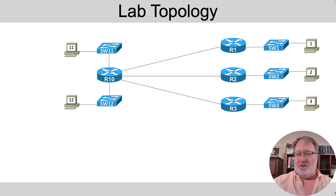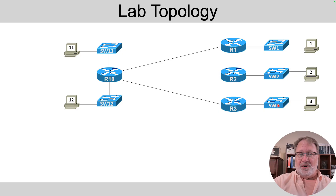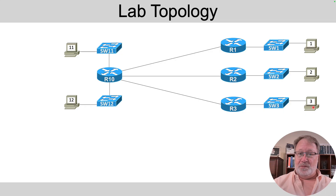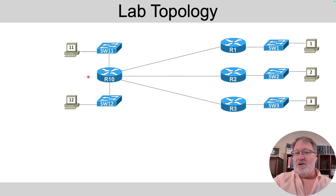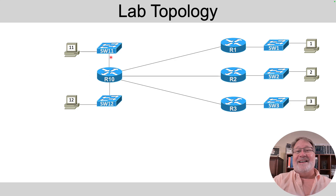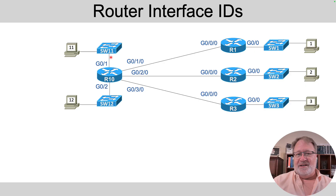Let's look more closely at the topology. The three routers on the right are branch office routers. Each is connected to a single LAN switch, and those LAN switches have a single VLAN configured. Each has one PC so that if you implement this in Cisco Packet Tracer, you'll have PCs to issue ping and traceroute commands from. There are three Ethernet WAN links that connect back to one central site router, R10. R10 connects to two LAN switches, each with one VLAN and a PC for ping and traceroute. The routers have interface IDs — here are the interface IDs you can use when doing your configuration.